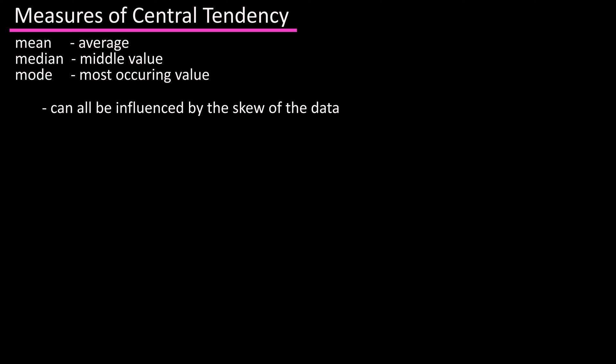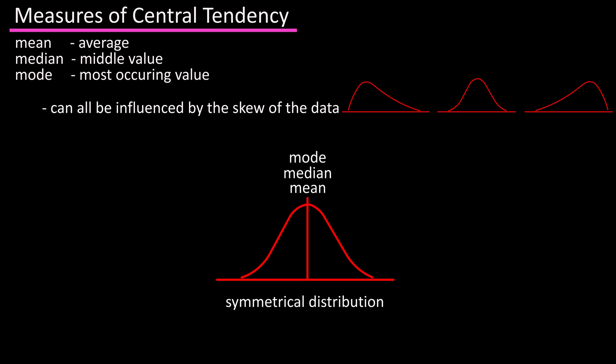All three of these tools can be influenced by the skew of the data. For instance, a symmetrical distribution, as you see in this graph, has some high and some low values and some values in between. So the mean, median, and mode will lie near the middle.